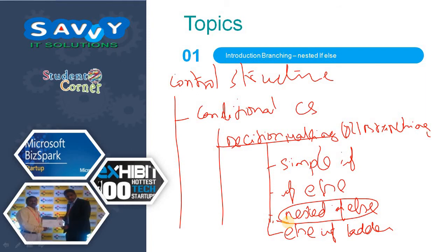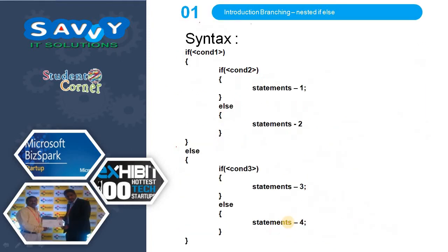Nested if-else is nothing but within the if-else we are using another if-else — then it is called nested if-else. Here, this is one if-else, and under this one if-else, one more if-else is used. That is what nested if-else means.